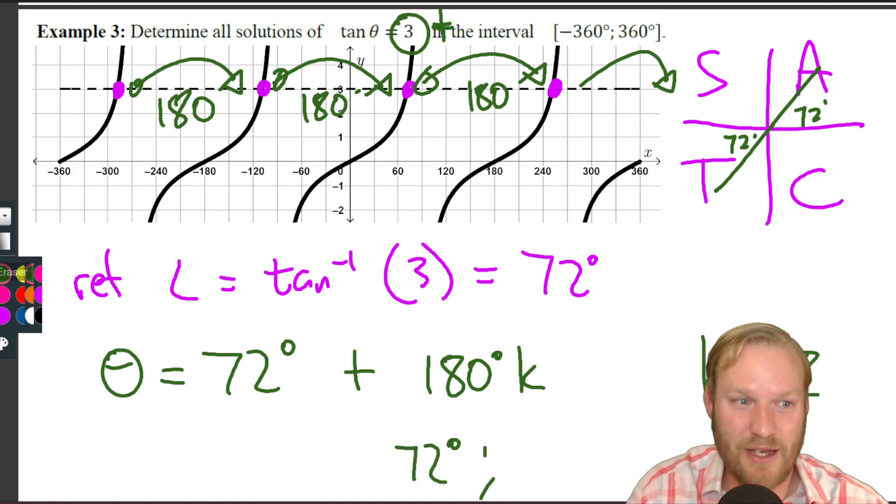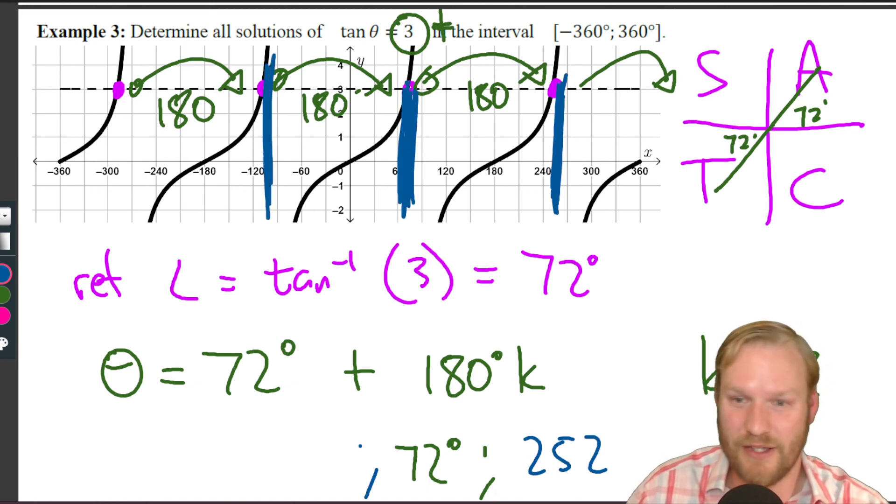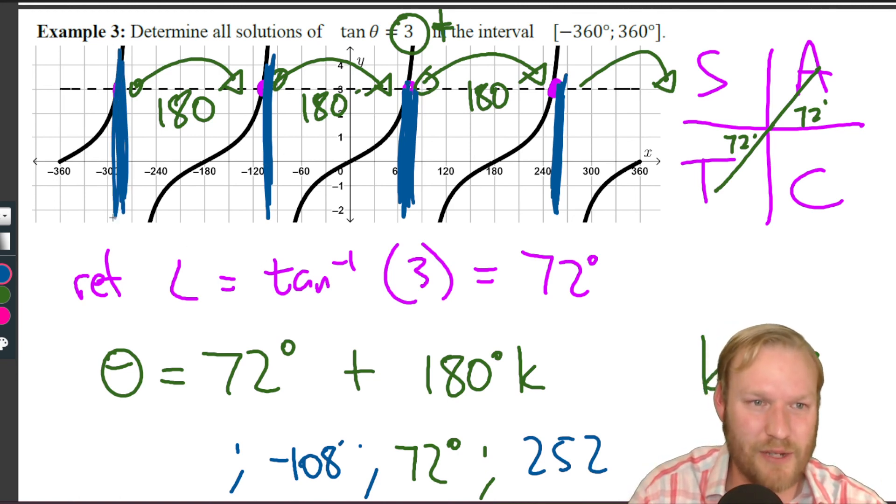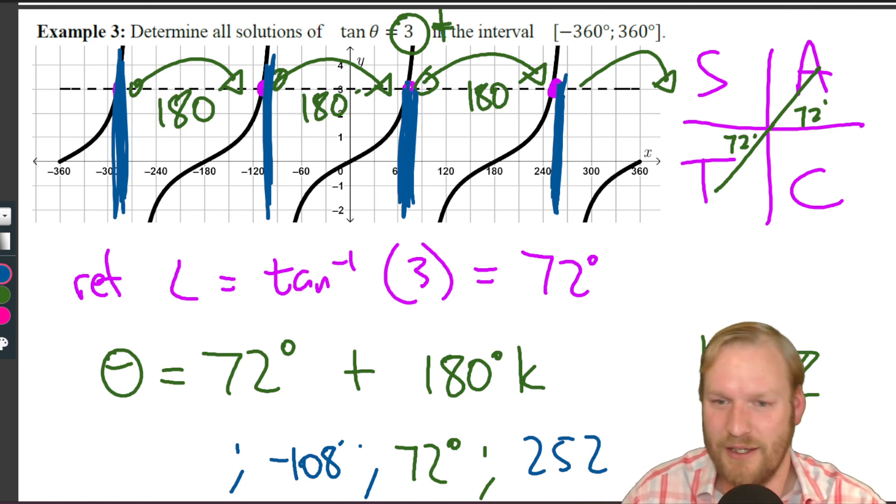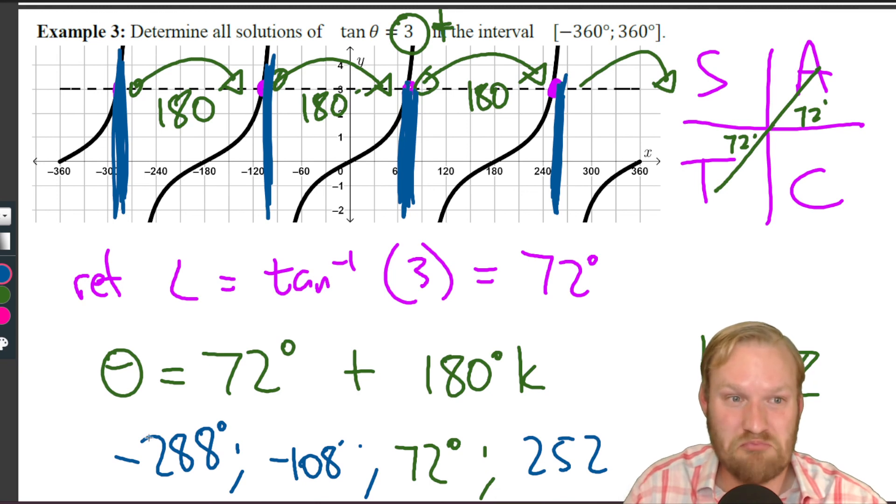We can see our solutions within negative 360 and 360. 72 degrees was one of them. From our diagram, we can see that the 72 related to this one here. If we add 180, we'll get the next solution. So 72 plus 180 gives us 252. If we subtracted 180, we would be over there, so we can go 72 minus 180 degrees and we get minus 108. What's quite nice about doing this with the graph visually is that you can see if that makes sense. Minus 108 does look like it's about there. And we can subtract another 180 to get to our last solution: minus 180, minus 288. There are the solutions.